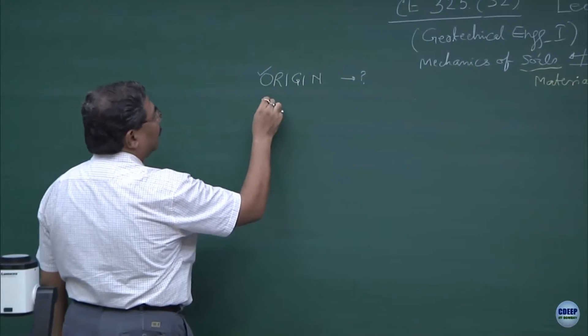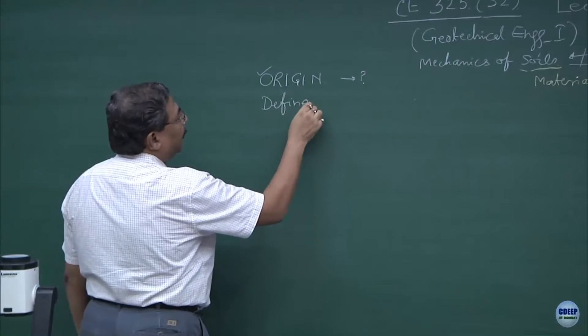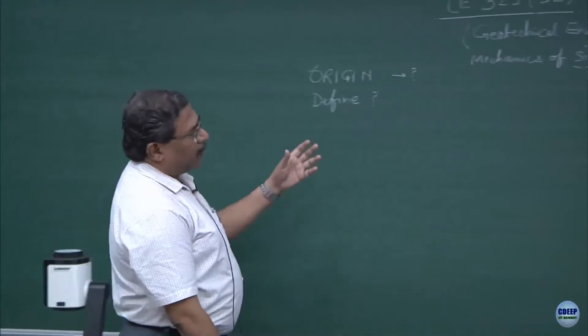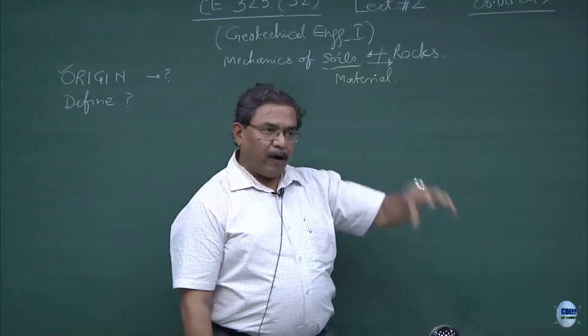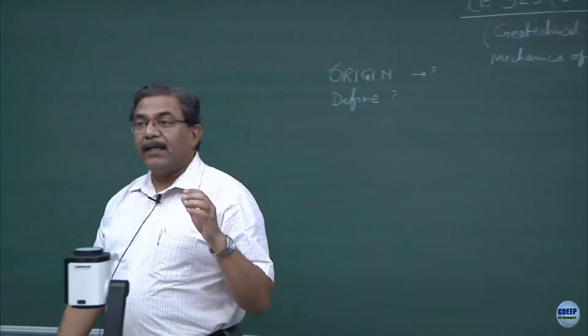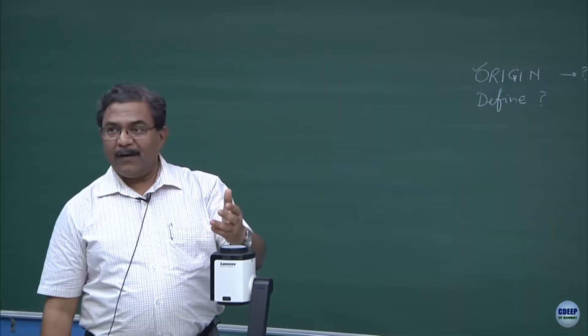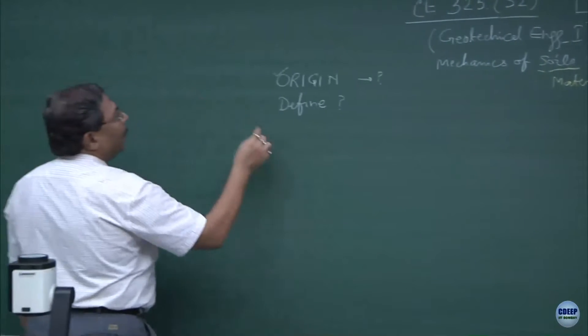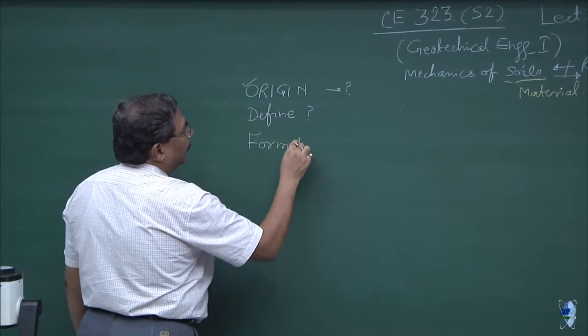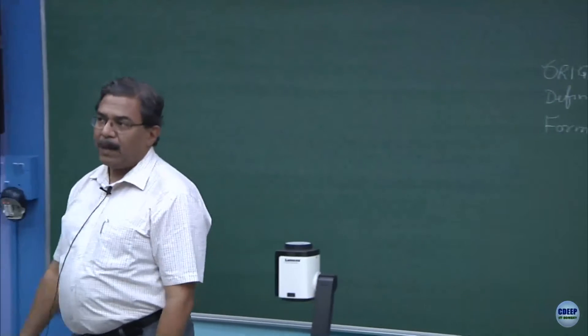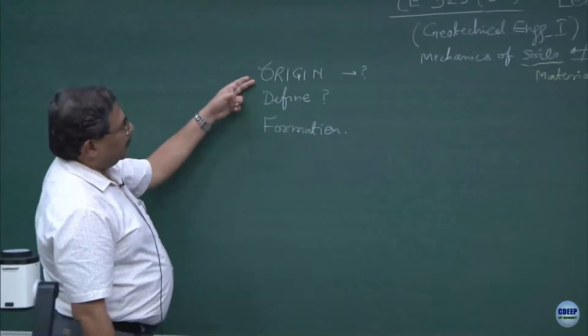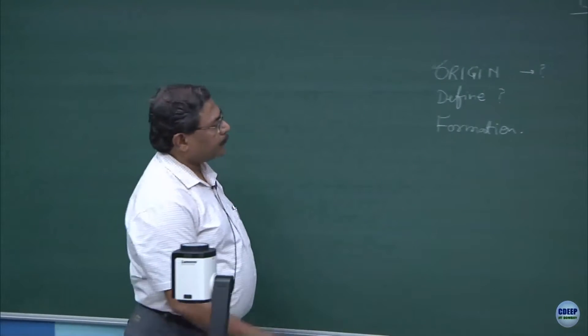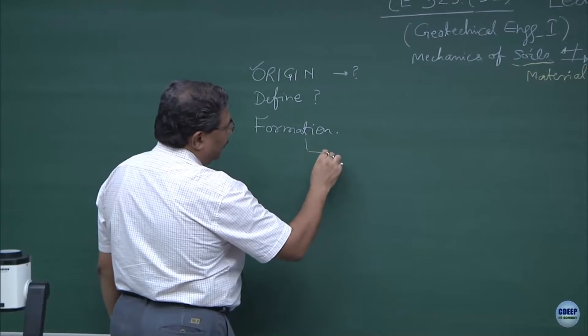We will talk about the origin, how the origin of the soils has occurred. In the process we will also try to define what this material is. The most important characteristic of this material is, it gets formed by some process and then it gets either transported or it remains at that place only, what is known as residual. This is what is normally known as formation.